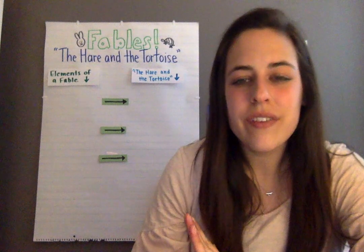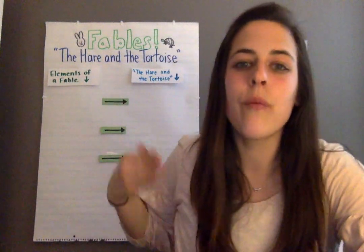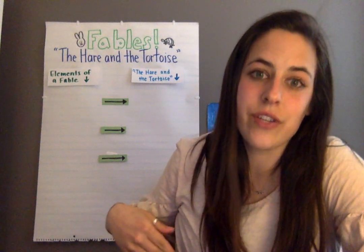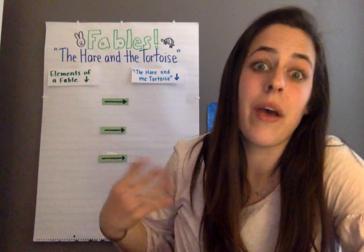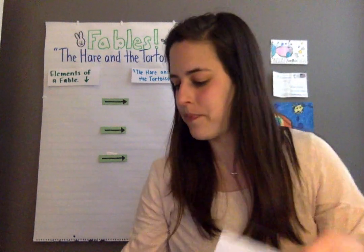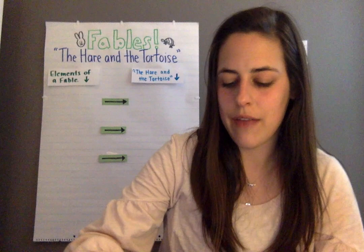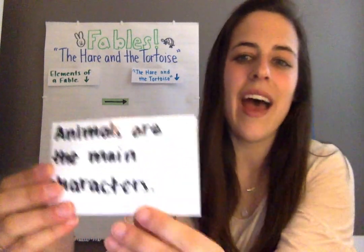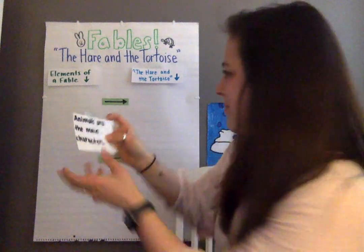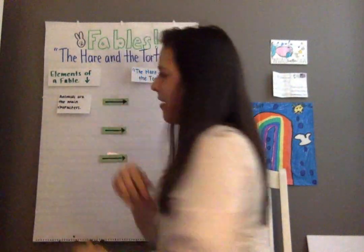Let's start first with the different elements of a fable, and then we'll go back through and talk about those elements shown in the Hare and the Tortoise. The first element that a fable has is that animals are the main characters. That's our first element of a fable.